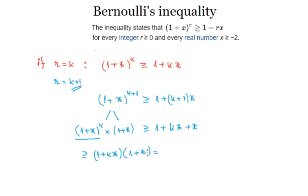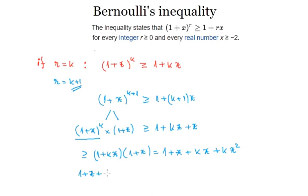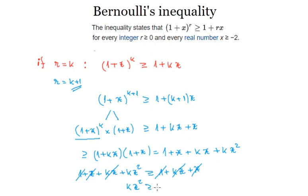Let's expand the brackets: 1 times 1 is 1, plus 1 times x is x, plus kx times 1 is kx, plus kx times x is kx squared. So on the left we have something greater than or equal to 1 plus x plus kx plus kx squared. Comparing with the right-hand side, 1 plus kx plus x, we cancel the like terms: the 1s, the x terms, and the kx terms. This leaves kx squared is greater than or equal to 0.